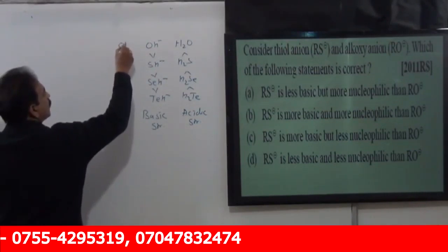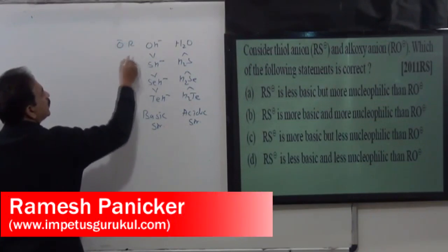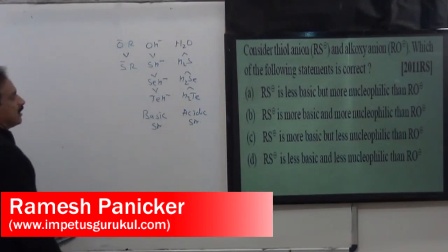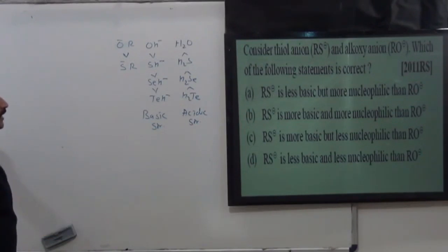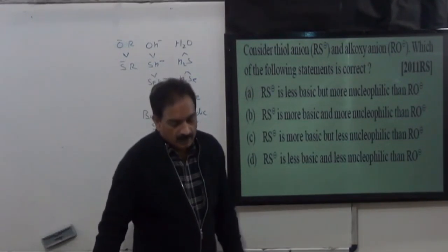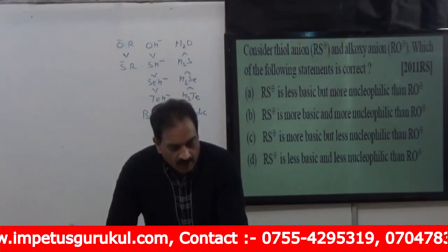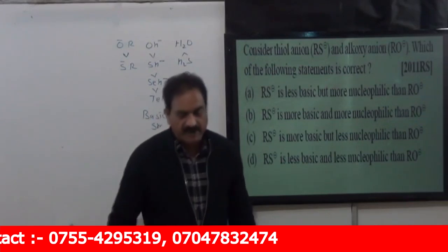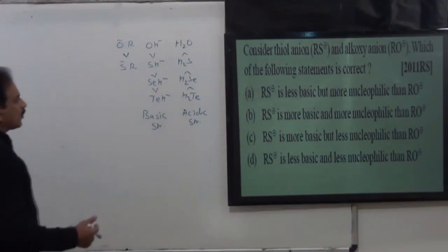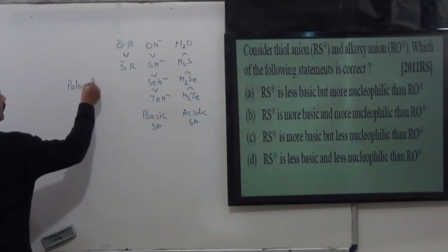And here comes the OR negative or RO negative and SR negative. So the basic strength is the order of this basic strength. So the first option is RS- less basic. This is the first statement.